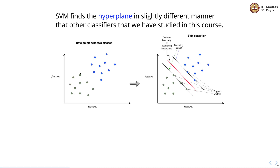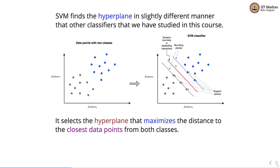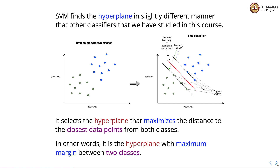This is an example classification setup with two features — feature 1 and feature 2 — and two classes. Points with blue color belong to one class and points with green color belong to the other class. SVM selects the hyperplane that maximizes the distance to the closest points from both classes. These two points are from the blue class and these three points from the green class are the closest to the hyperplane. We want to find the hyperplane that maximizes the margin between two classes.